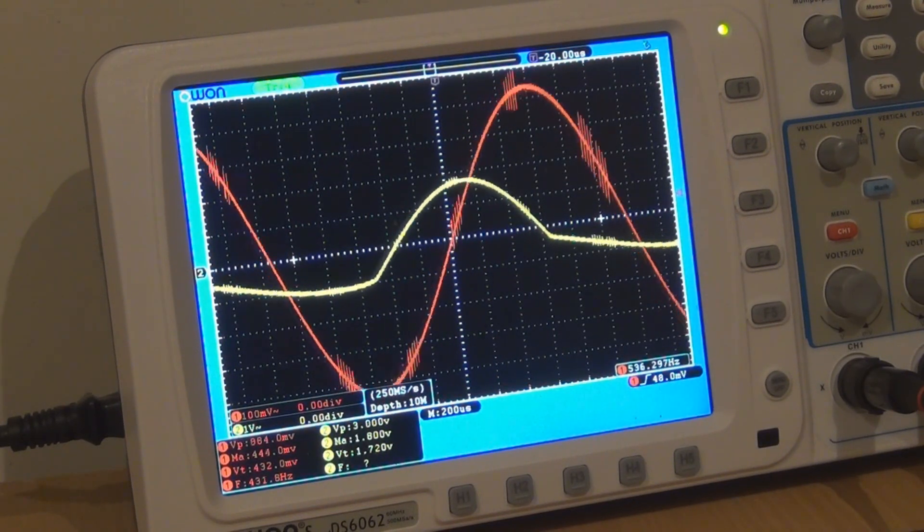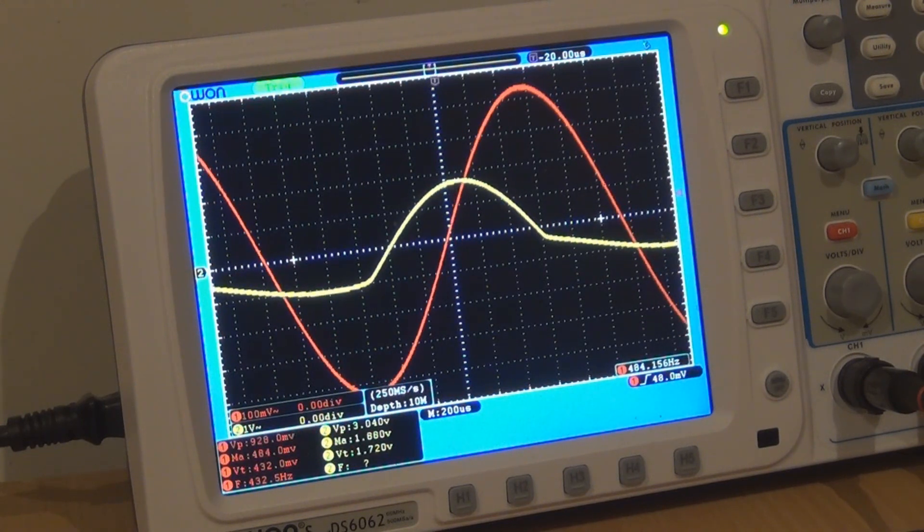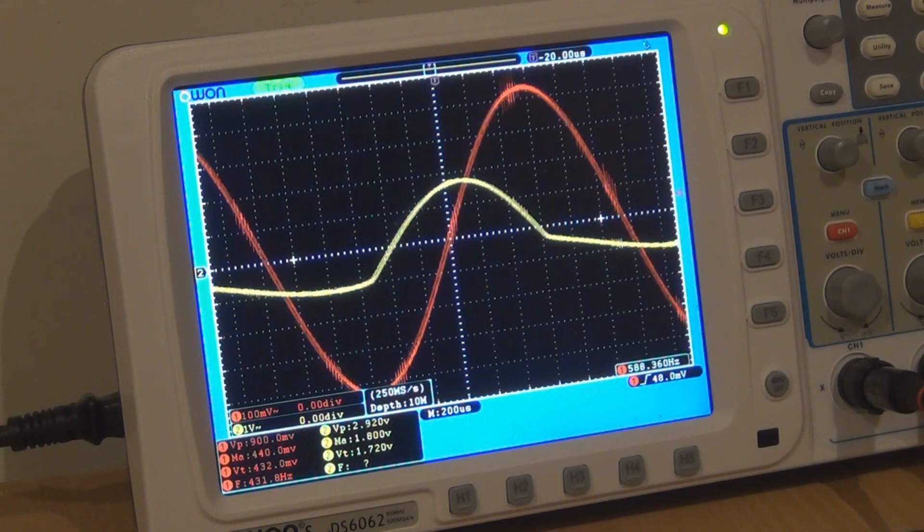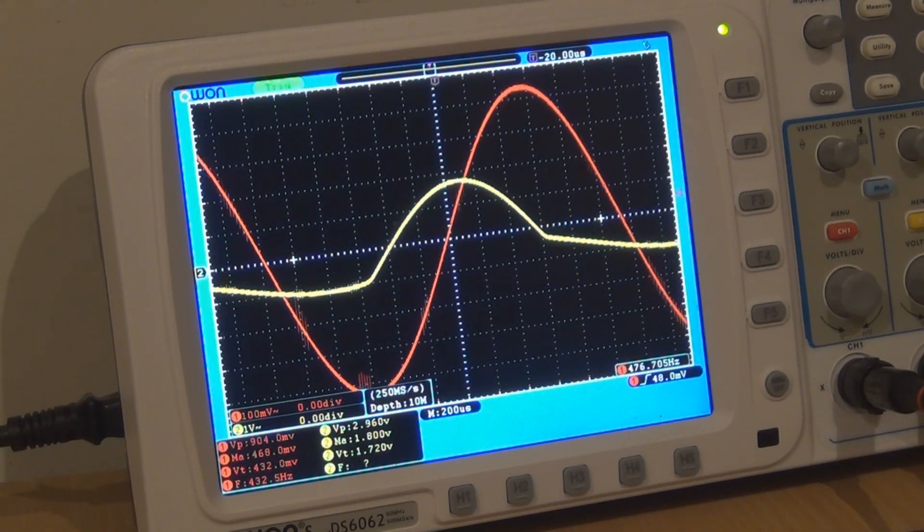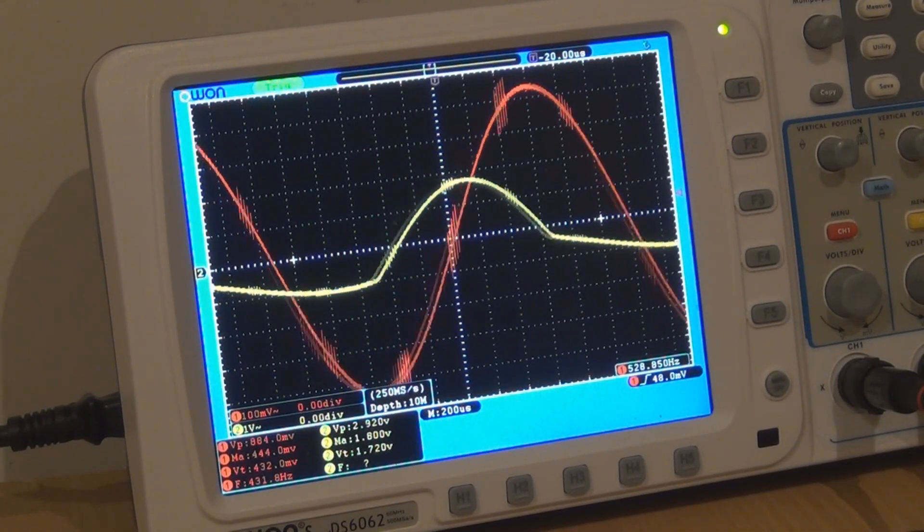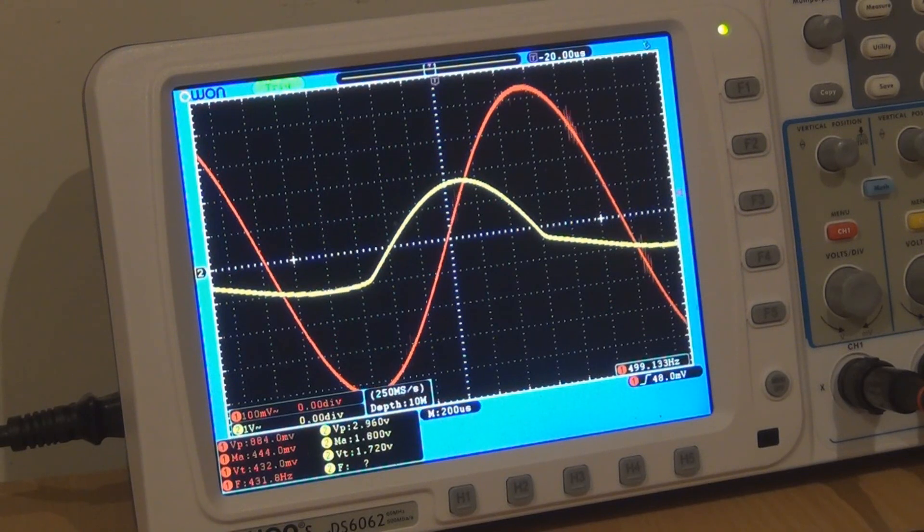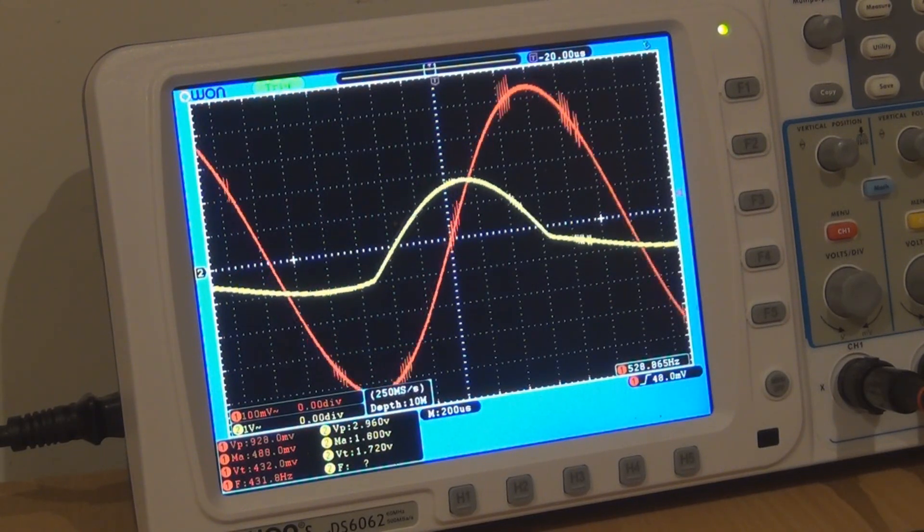That's an easy mod that you can do. You can change your diodes to a lower forward voltage diode like a germanium diode if you want more distortion, or if you want more headroom then you can increase the forward voltage.